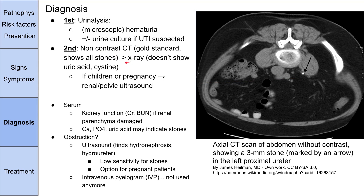The non-contrast CT is much better than x-rays — x-rays only show some stones and don't show uric acid or cysteine stones. If a patient is young or pregnant, you don't want to do a non-contrast CT as your first test. Instead, do a renal pelvic ultrasound, which isn't quite as sensitive but is safe in pregnancy.